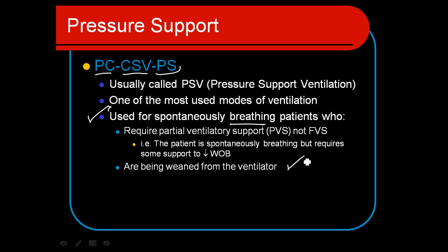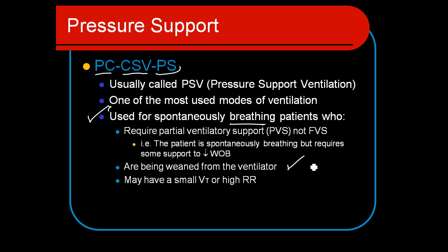Sometimes if they're being weaned from the ventilator, we'll use a mode like this to determine their ability to spontaneously breathe. We can do that by setting up a small level of pressure support, say plus five, six, or seven, to take over the work of breathing through the endotracheal tube. The patient determines the tidal volume and respiratory rate on their own — it's up to them what they need for a minute ventilation, and they're responding to their own CO2 levels to determine what their body requires.